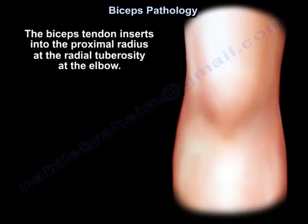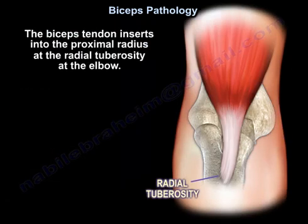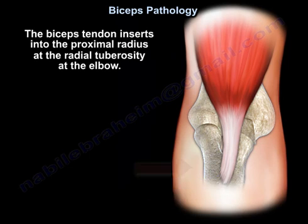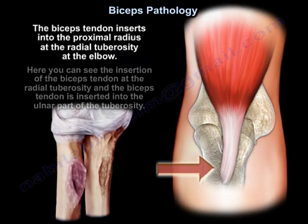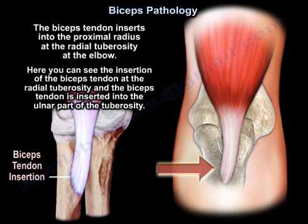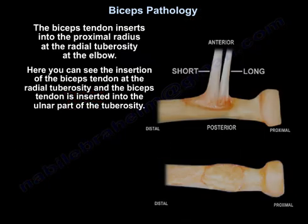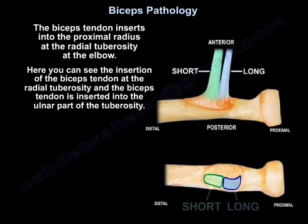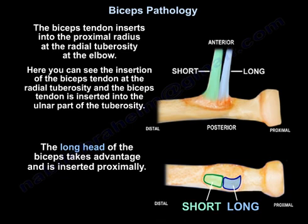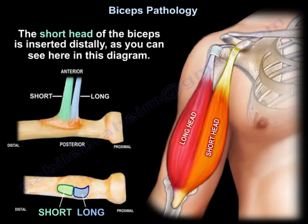The biceps tendon inserts into the proximal radius at the radial tuberosity at the elbow. You can see the insertion of the biceps tendon at the radial tuberosity; it is inserted into the inner part of the tuberosity. The long head inserts proximally, while the short head is inserted distally, as you can see in this diagram.